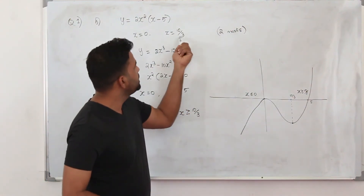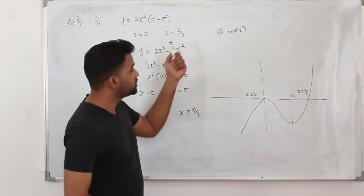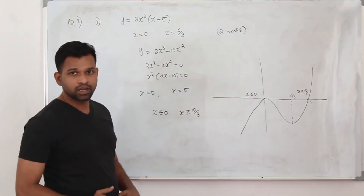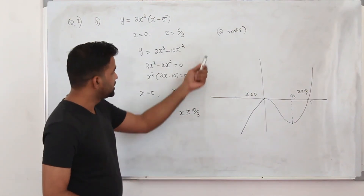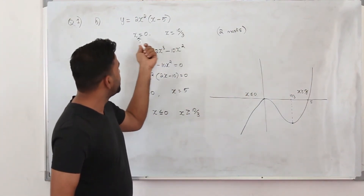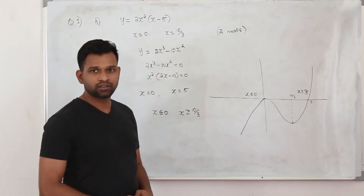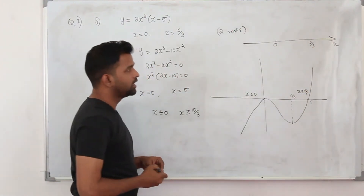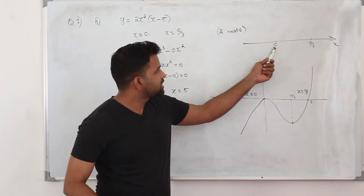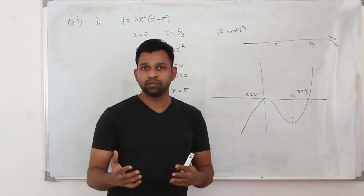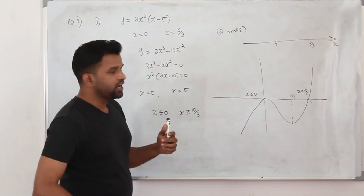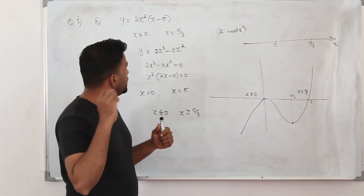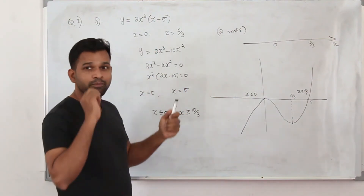With only 2 marks for this question, we won't have time to sketch the graph in an exam. The easiest way is to use the two stationary points x equals 0 and x equals 10/3, and determine whether each is a maximum or minimum using the second derivative test — which we learned in Pure Math 1.